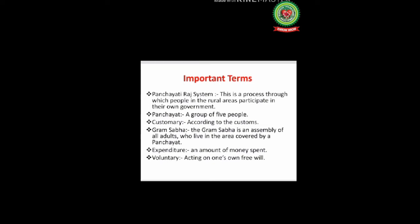Before starting the chapter, let's discuss important terms. The panchayat system is a process through which people in rural areas participate in their own government. Panchayat means a group of five people. Customary means according to customs. Gram sabha is an assembly of all adults who live in the area covered by a panchayat. Expenditure means an amount of money spent. Voluntary means acting on one's own free will.